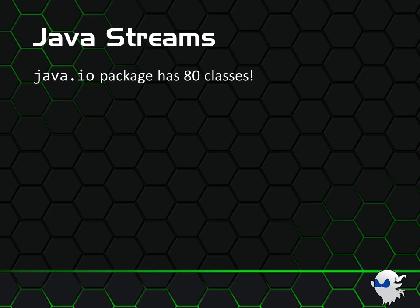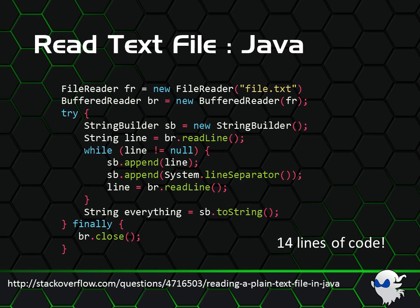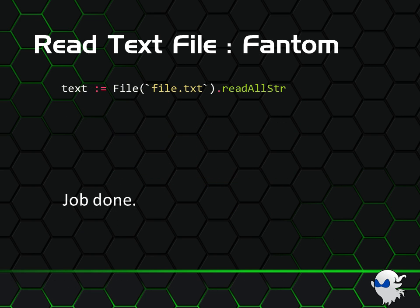Another Java example, this time with streams. The Java IO package has some 80 classes. And Fantom has two: an in-stream and an out-stream. Again, they're functional, use closures, and have all the methods you need — easy to remember, easy to use. Now, let's put some of those 80 Java classes to work and read a plain text file. This is the accepted answer from a Stack Overflow question on how to read a plain text file in Java. It's 14 lines long. How complicated is that? In Fantom: one line — file.readAllString. It's that simple. And this is not just some handy utility method; this is the core API, and it is just one small example of the thought gone into making common tasks really simple. Note how we use a URI to represent a file on the file system.